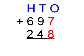First in the ones column we add 7 plus 8 which equals 15. Put the 5 down and carry the 1.